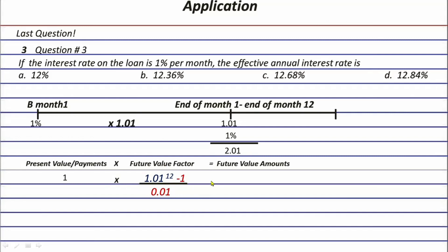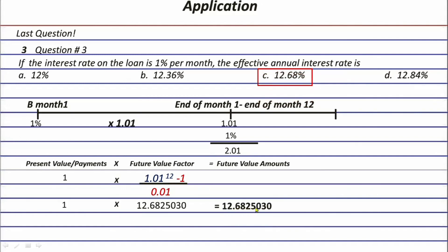That calculation gives us 12.682503, multiplied by one, which remains 12.6825. That corresponds to letter C, 12.68 percent. This means that if you pay one percent per month and that interest grows with the principal, you are effectively paying 12.68 percent interest per year. That's question number three and its solution.